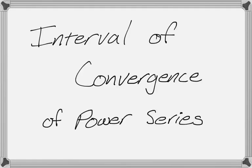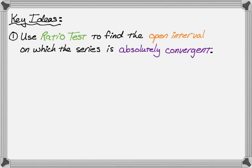In this video we're going to talk about how to find the interval of convergence for a power series. There are a couple of key ideas we're going to use. The first one is that we're going to use the ratio test to find the open interval on which the series is absolutely convergent.